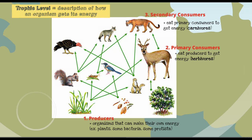Secondary consumers eat primary consumers to get their energy, and these are carnivores. So our mountain lion, when it eats the deer, is a secondary consumer. I also want to point out that a scrub jay can be a secondary consumer — it doesn't have huge teeth and it's not an aggressive predator, but it's eating a grasshopper, which is a primary consumer, and so it qualifies as a secondary consumer.